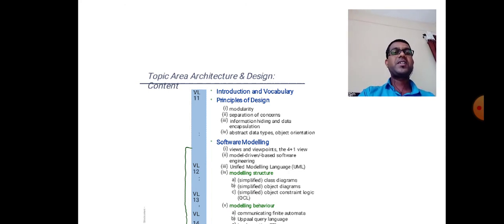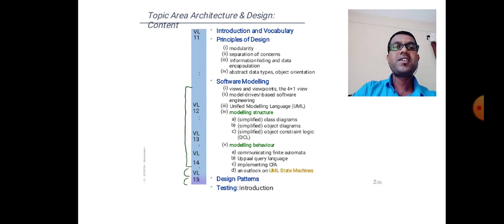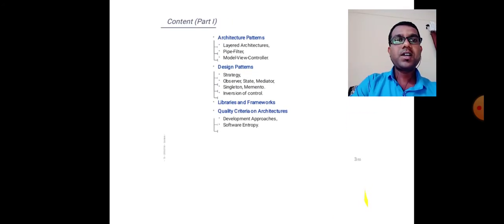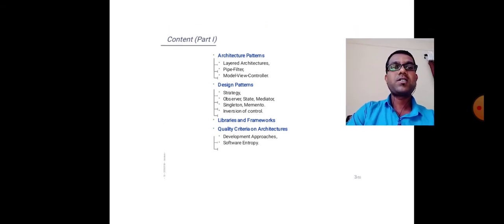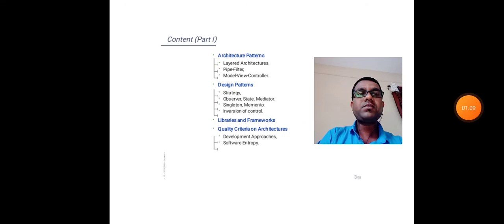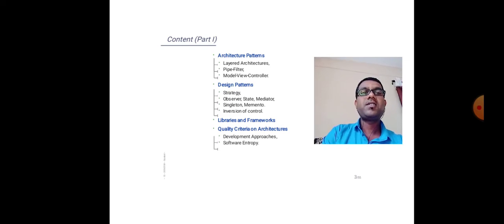Then software modeling — modeling structure and modeling behavior. After that we have to look towards design patterns, including architecture patterns such as layered architecture, pipe-filter, and model-view-controller. Within design patterns we will see strategy, observer, state, mediator, singleton, memento, and inversion of control, then libraries and frameworks, and quality criteria in architecture.